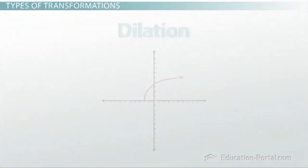The next kind of transformation is called a dilation. These stretch or shrink the graph, maybe from something like this, to this.